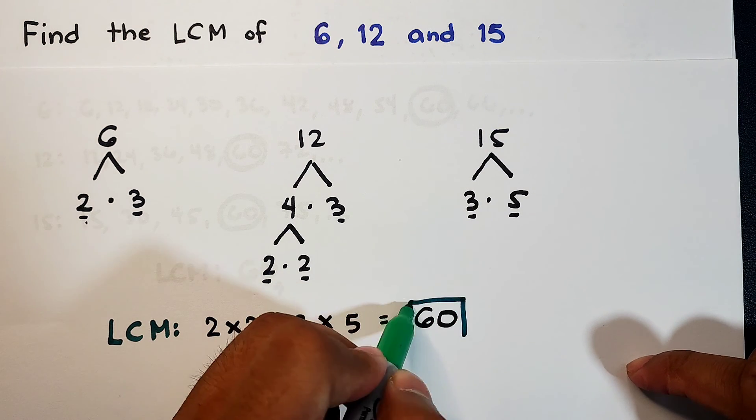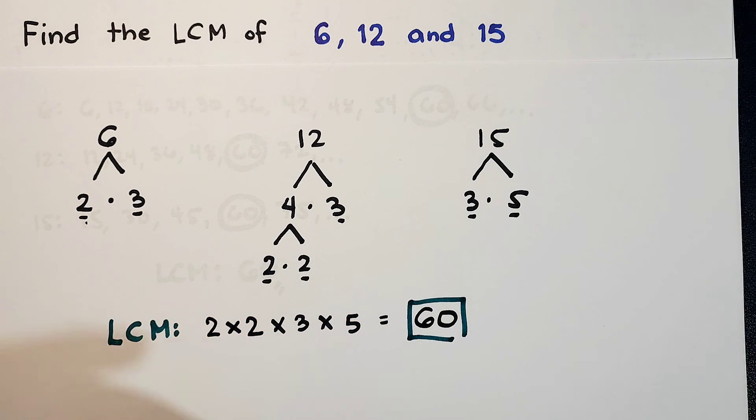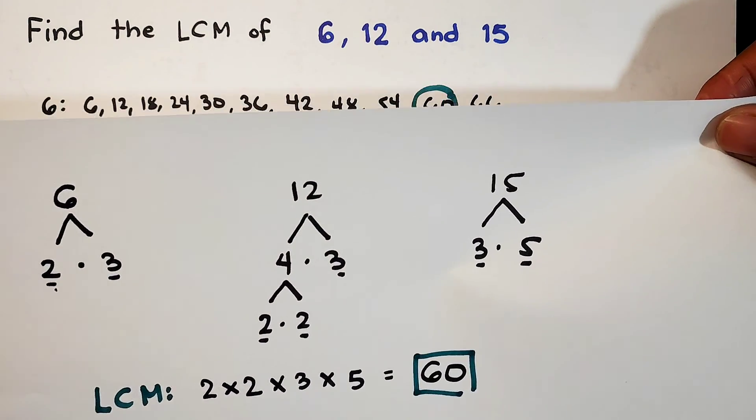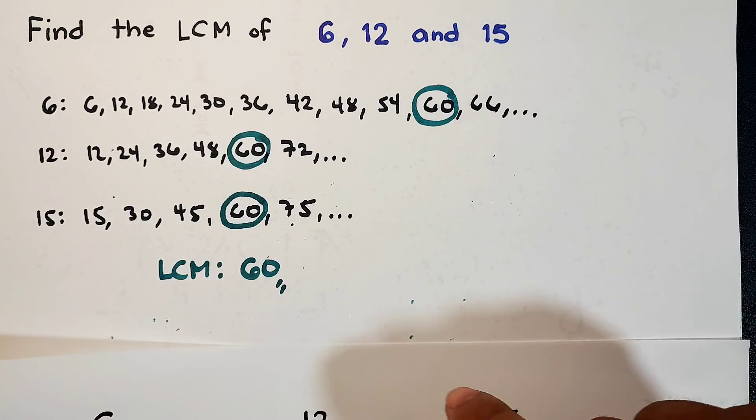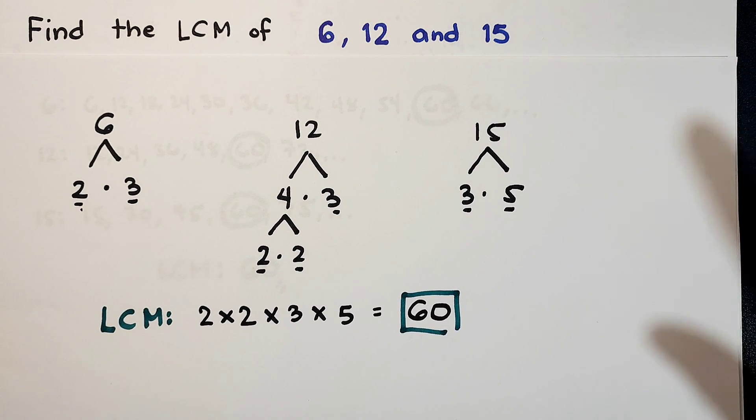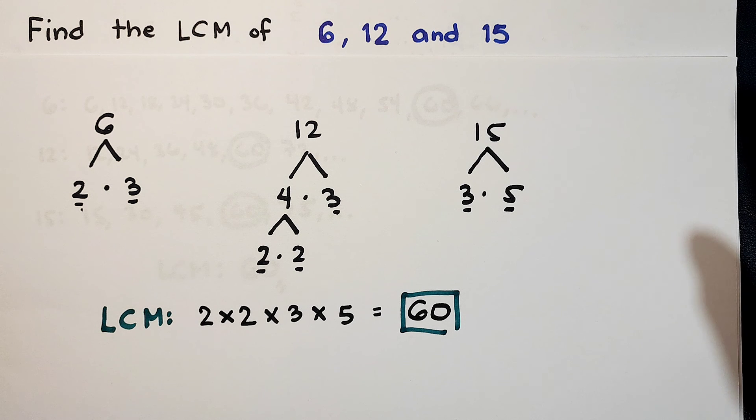So definitely, this is our prime factor. This is the least common multiple. And compare natin dito sa sagot natin kanina, this is 60, and your answer here is also 60. So I hope guys, you learned something from this video on how to find the LCM of 3 numbers.